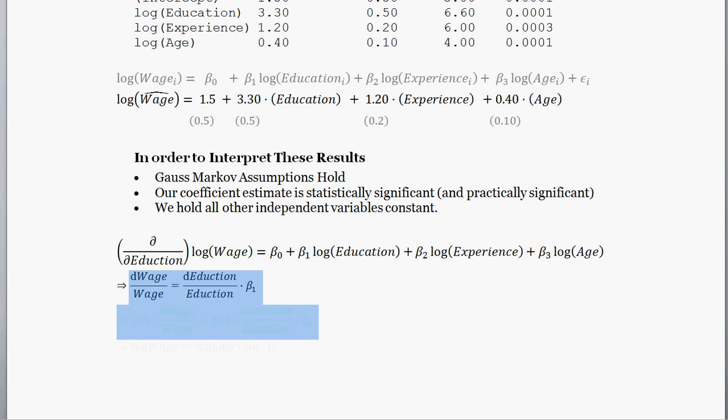So the next step here, we're going to times both sides by 100, so that we have 100 times d wage over wage, and we have 100 times the change in education divided by education. So reinterpreting what those are, 100 times d wage over wage is equivalent to the percent change in wages. So reinterpreting this result, we now have the percent change in wages is equal to the percent change in education times our beta 1 coefficient.